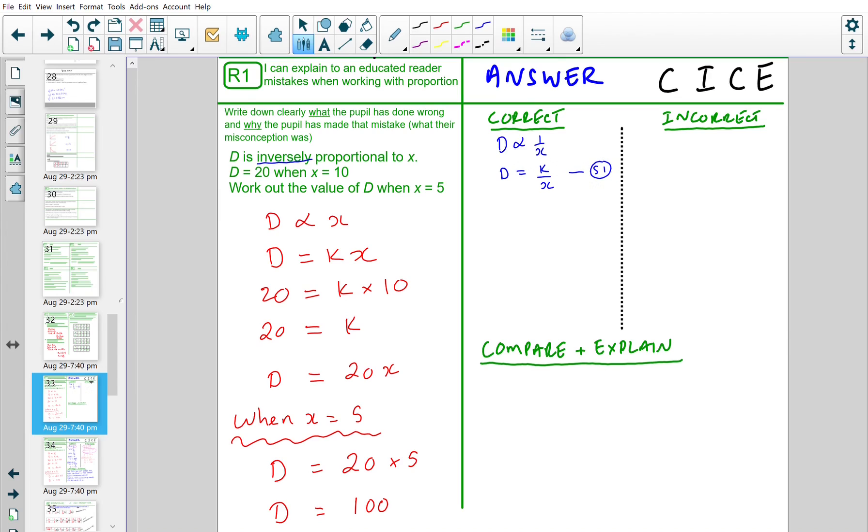Step 2, we substitute the values given in the question into step 1. So when D is equal to 20, k is the unknown we're trying to find over the value of x is 10. To find k, we need to multiply by 10 on both sides, gives k equal 200. Step 2, substitute it part.